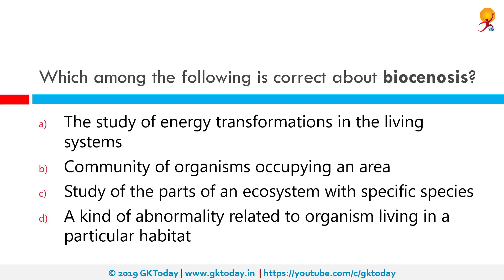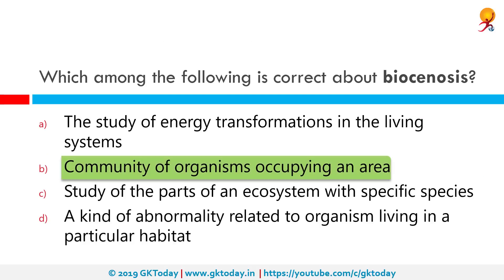Which among the following is correct about biocoenosis? The correct answer is a community of organisms occupying an area. Biocoenosis was a term coined by Karl Möbius in 1877, and it describes the interacting organisms living together in a habitat. In the paleontological literature, the term distinguishes life assemblages which reflect the original living community living together at one place and time.